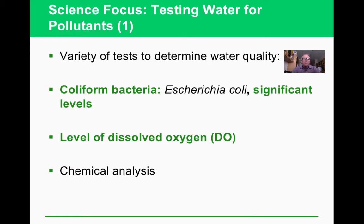Several tests measure water quality. The E. coli/coliform bacteria test indicates fecal contamination — coliform bacteria itself isn't particularly dangerous to us, but it signals that fecal matter is present in the water. Dissolved oxygen readings are also important because aquatic life needs dissolved oxygen to survive, so low levels indicate a problem.